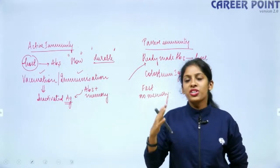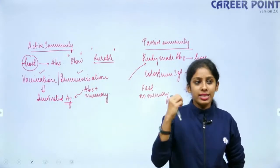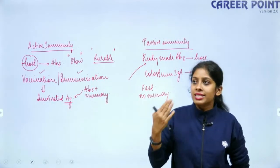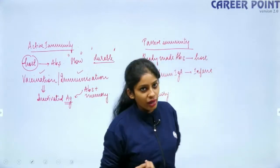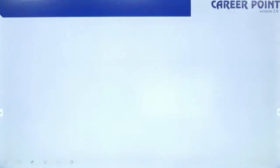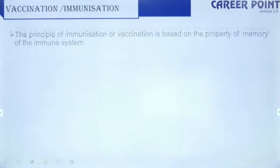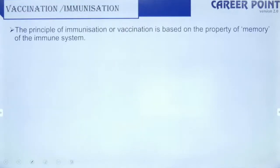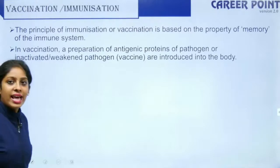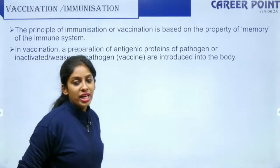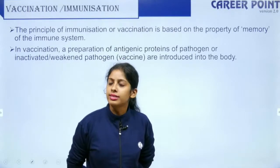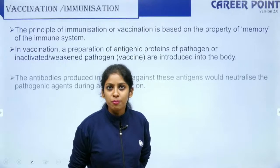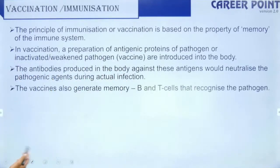Innate and adaptive immunity describe how the body fights; active and passive immunity are based on antibody production. Vaccination or immunization relies on the property of memory — we can give the inactivated whole antigen, a subunit, or a DNA portion to create memory in the body.